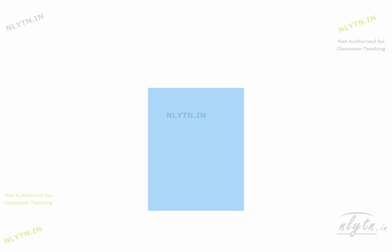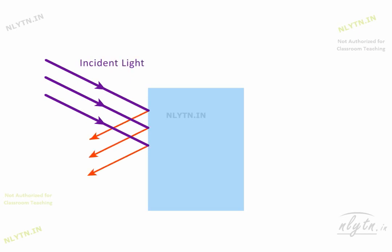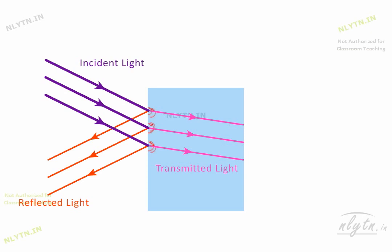In the last chapter, we mentioned that when light strikes a surface, some light is reflected, some light is transmitted, and some light is absorbed by the surface.